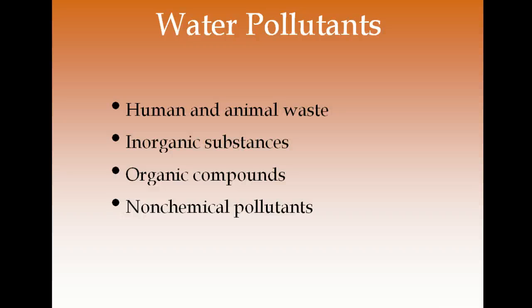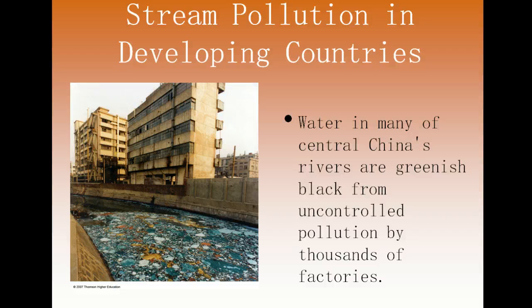The different types of water pollutants include human and animal waste, inorganic substances, organic compounds, and non-chemical pollutants. Rivers in China have turned greenish-black from factory pollution — so polluted they could be lit on fire.